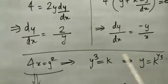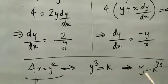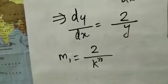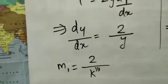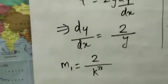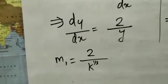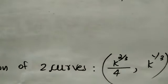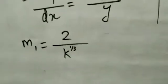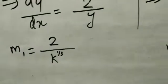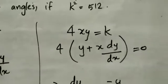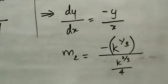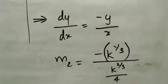At the point of intersection, substitute x and y values into dy/dx to get the slopes. For the first curve, m1 = 2/y = 2/k^(1/3). For the second curve, m2 = −y/x, which gives m2 as a function of k.